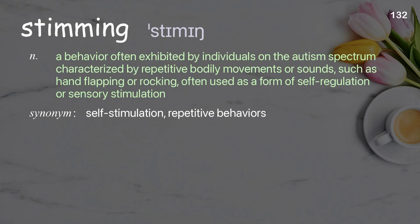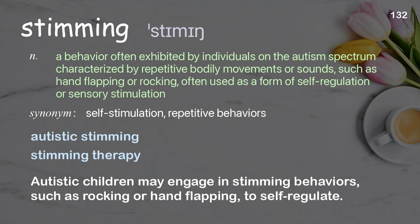Stimming: a behavior often exhibited by individuals on the autism spectrum, characterized by repetitive bodily movements or sounds such as hand flapping or rocking, often used as a form of self-regulation or sensory stimulation. Examples: autistic stimming, stimming therapy. Autistic children may engage in stimming behaviors, such as rocking or hand flapping, to self-regulate.